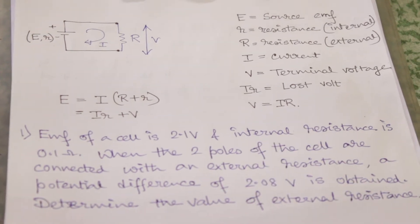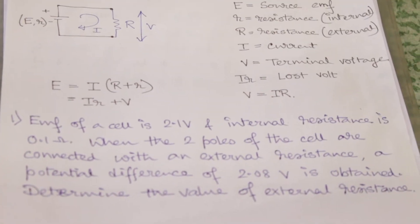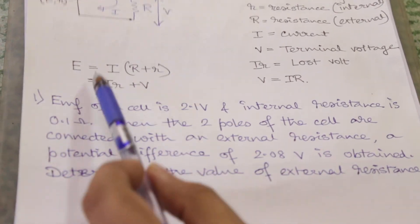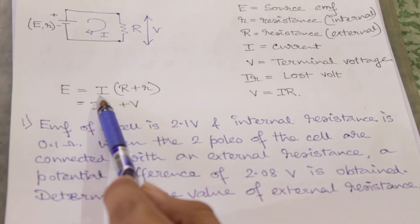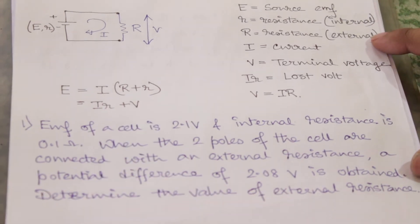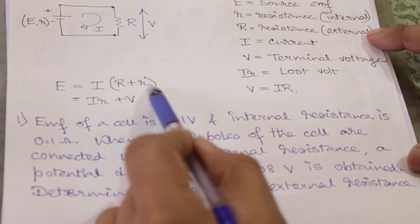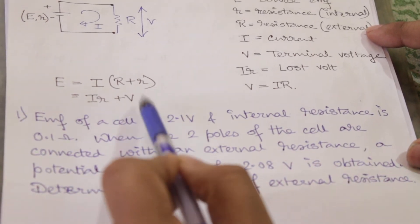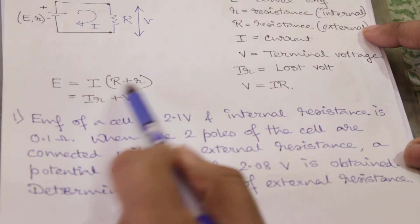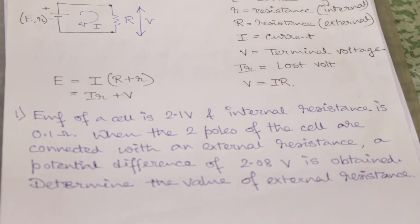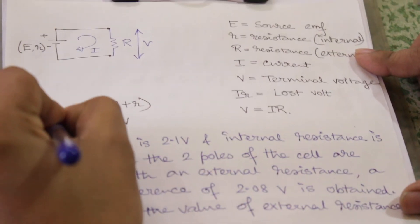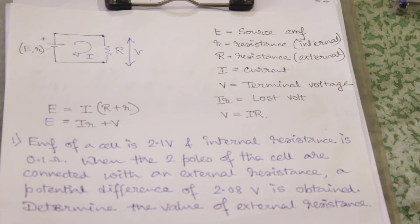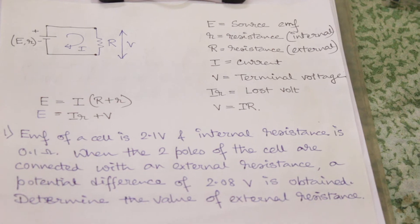Terminal potential capital V will be equal to I into capital R. So the basic equation for the EMF of a cell is capital E equal to current into sum of internal resistance and external resistance. Now I into capital R is V, so it is here, and I into smaller r is lost volt which is here. So EMF of a cell is equal to sum of these two.